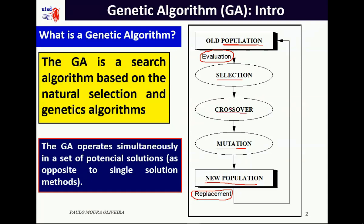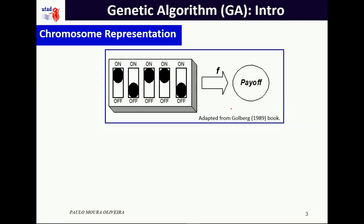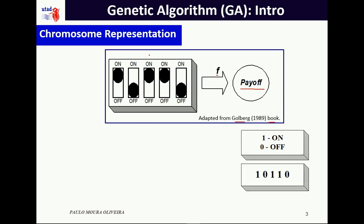The first thing we need to address in the standard binary genetic algorithm is how to represent a solution — how to represent the chromosome. Consider a game, adapted from the Goldberg book, consisting of five switches. According to the switching combination, we can have a different payoff. It is quite natural to represent the on state by one and the off state by zero.